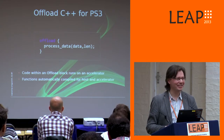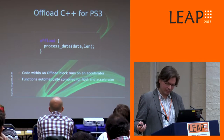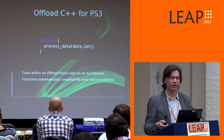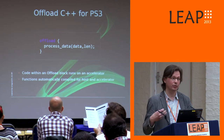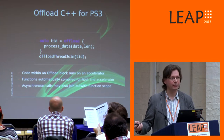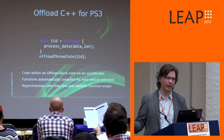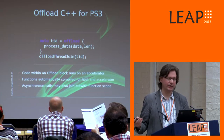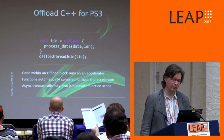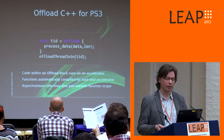The functions that are within the dynamic scope of the offload block will all be automatically compiled for both the host and for the accelerator. That was a blocking launch. For a non-blocking launch of that thread, you would first of all capture the thread ID, and then at some point later in the program you would join the threads with offload thread join. Asynchronous calls may also join out with the function scope where they were launched.